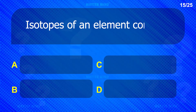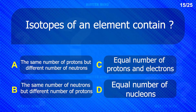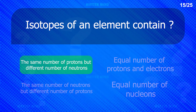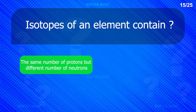Isotopes of an element contain — The same number of protons but different number of neutrons.